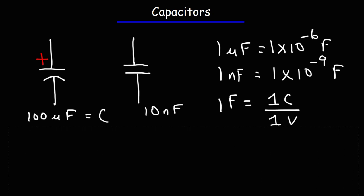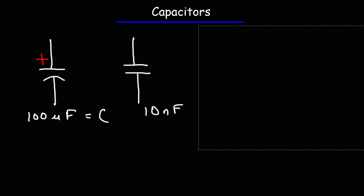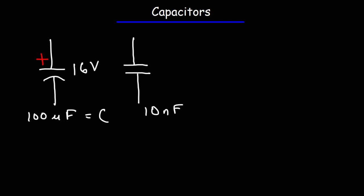When deciding to buy a capacitor, there are two important things to look at: the capacitance, and the voltage that the capacitor can hold. It has a maximum voltage level — if you exceed that, the capacitor can be destroyed. So let's say the maximum voltage rating of this capacitor is 16 volts. If you know the voltage and the capacitance, you can calculate the charge that you could store on that capacitor.